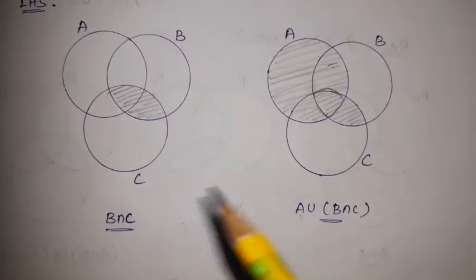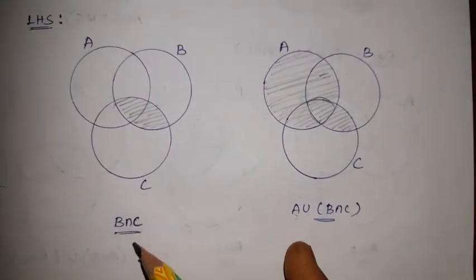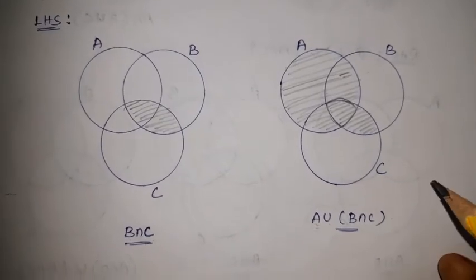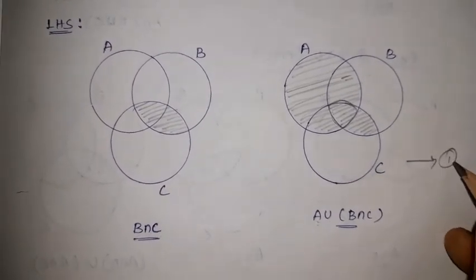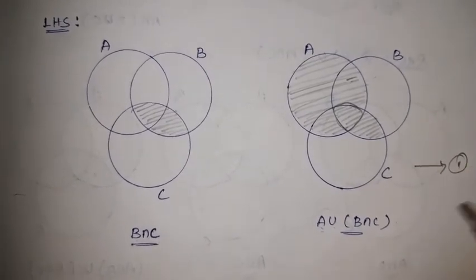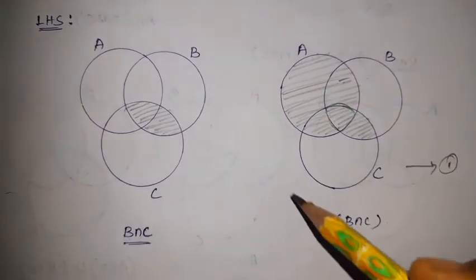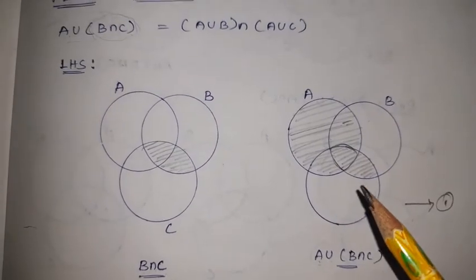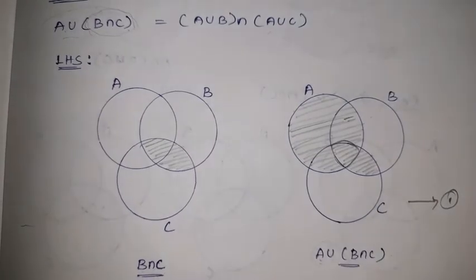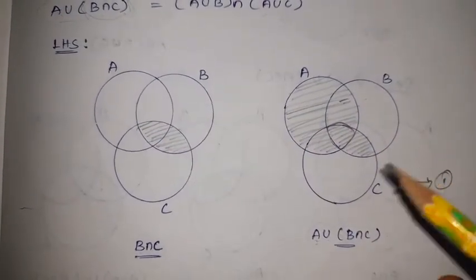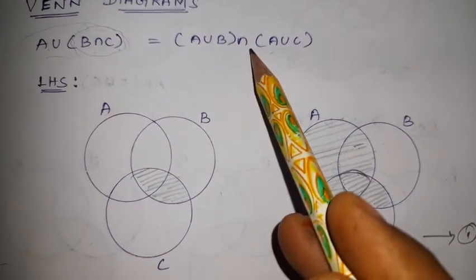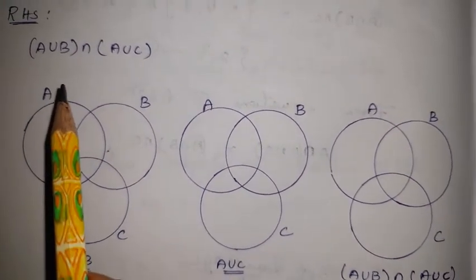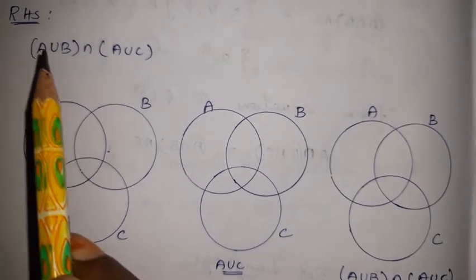The left hand side has two diagrams: B intersection C is the first diagram, and A union (B intersection C) is the second diagram. The left hand side is now complete. For the final diagram comparison, the right hand side is A union B intersection A union C. Overall for the first property, there are five diagrams: two for the left hand side and three for the right hand side, corresponding to sets A, B, and C.